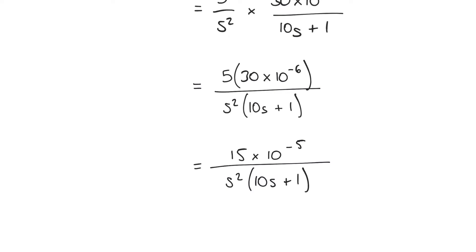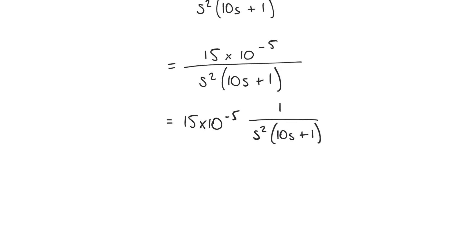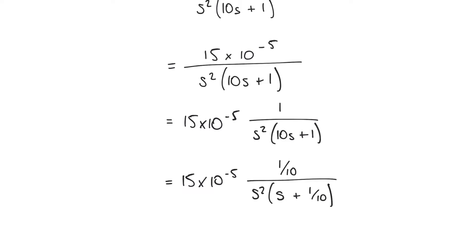We take that factor of 15 times 10 to the minus 5 out of the fraction so the numerator becomes 1. We then remove the coefficient of 10 from the 10s term by dividing all terms by 10 — top and bottom — so 10s becomes s, and the constant 1 becomes 1 over 10. This gives a cleaner form that we can match against entries in our Laplace transform table.